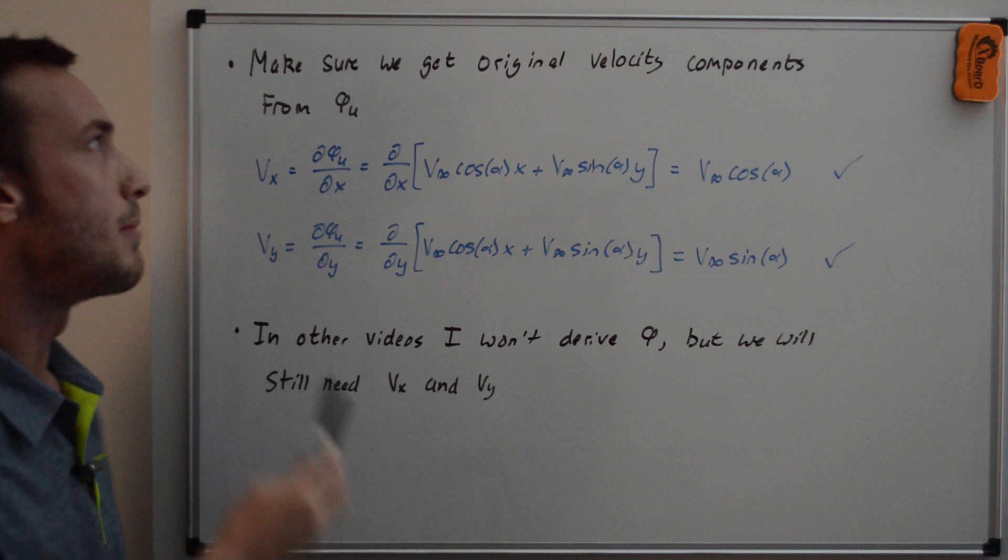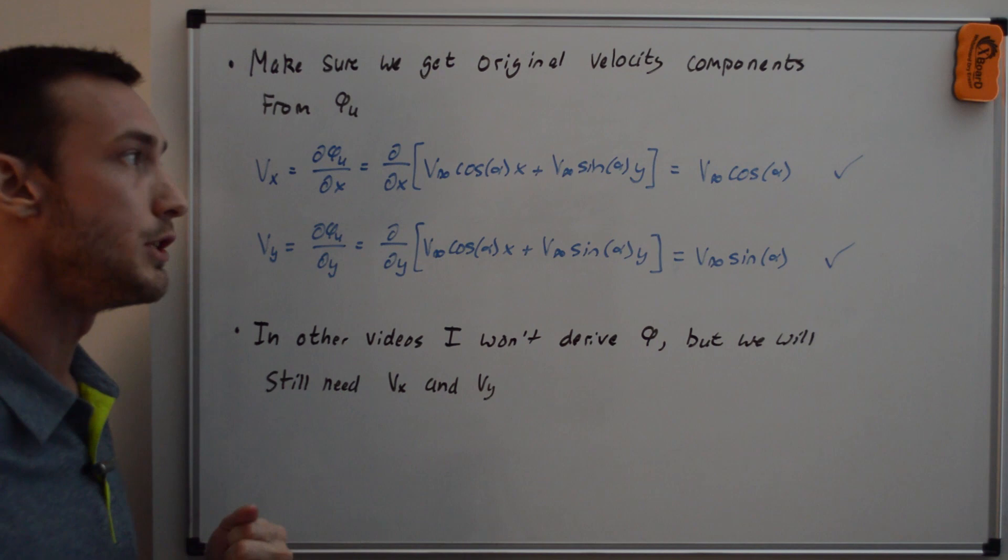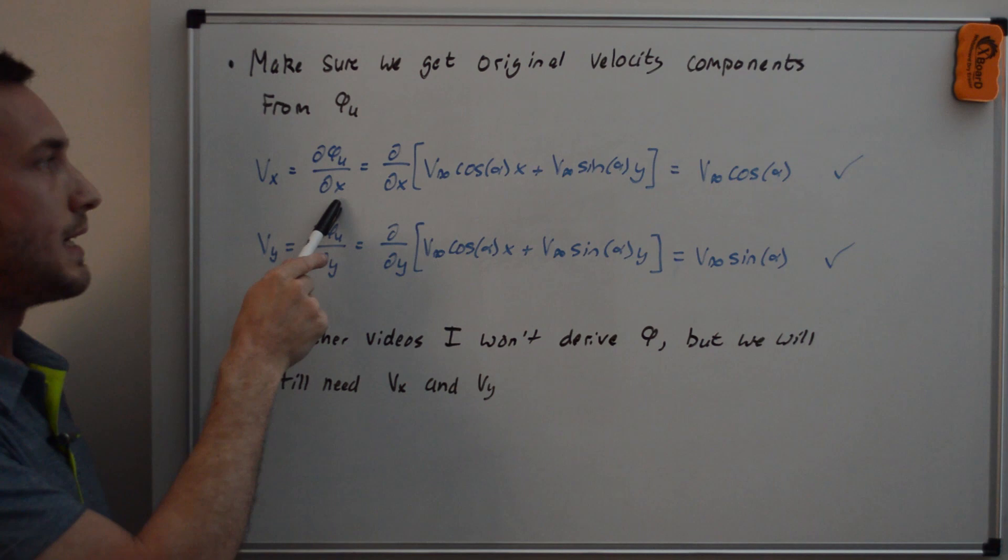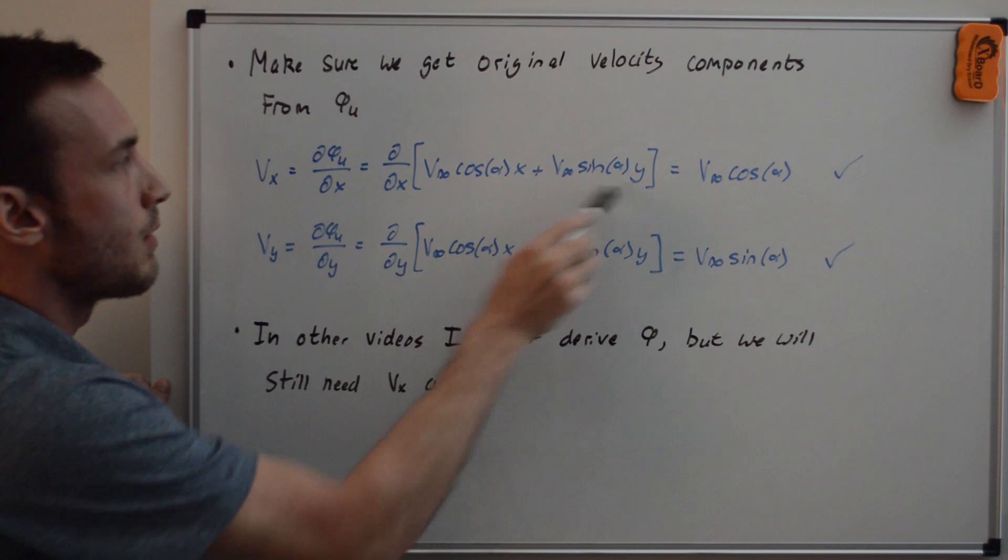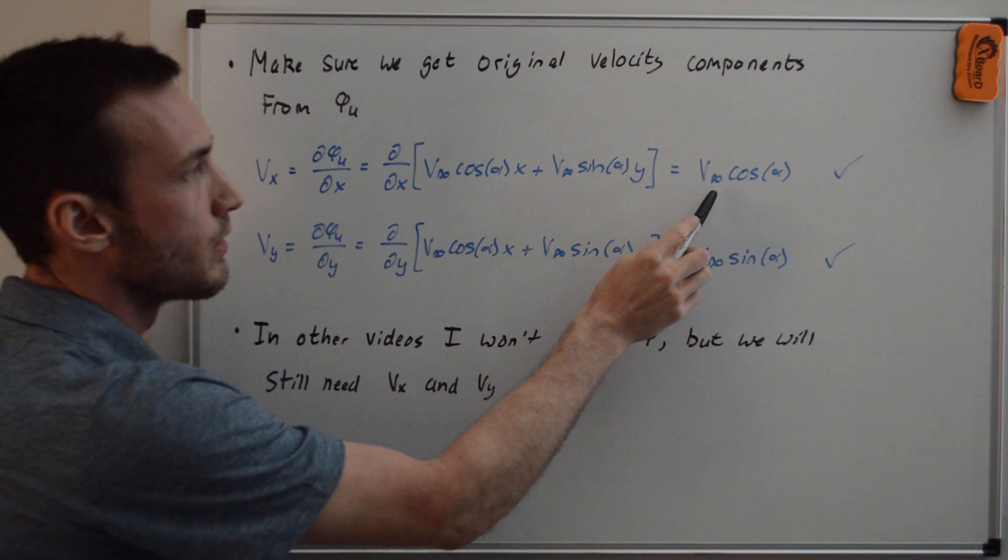So finally, as the third step, we're going to complete the circle by making sure we get the original velocity components vx and vy from our velocity potential phi u. So to do that, we're just going to use vx equals dphi u dx and vy equals dphi u dy. And you can see that since this is only a function of y, when you take the derivative with respect to x, it just goes to zero, and here with respect to x, we return v infinity cosine alpha, and that is indeed our original vx.